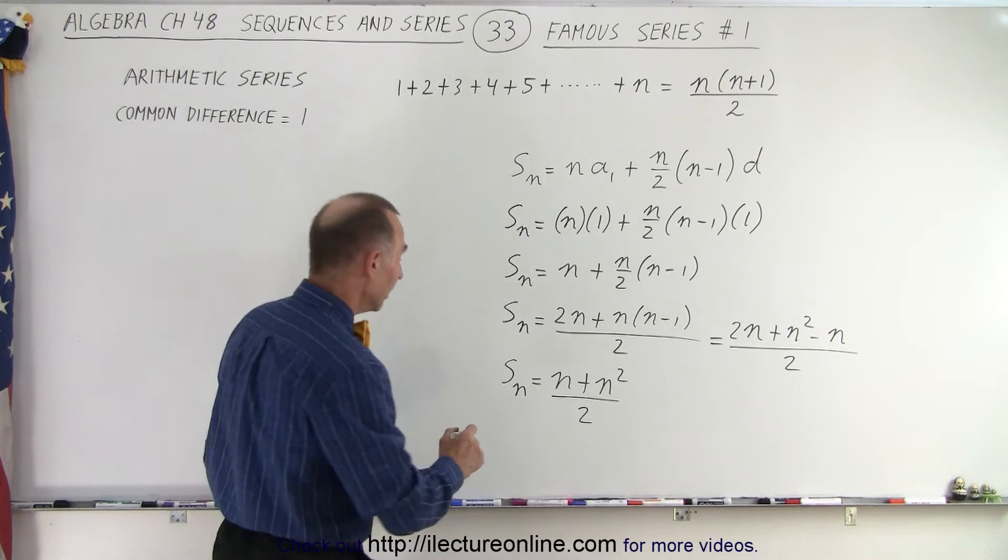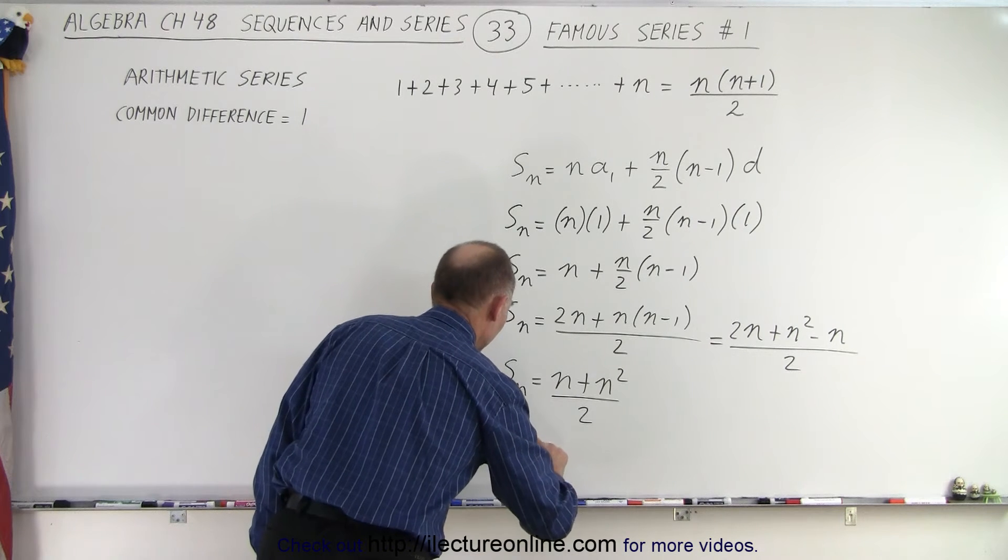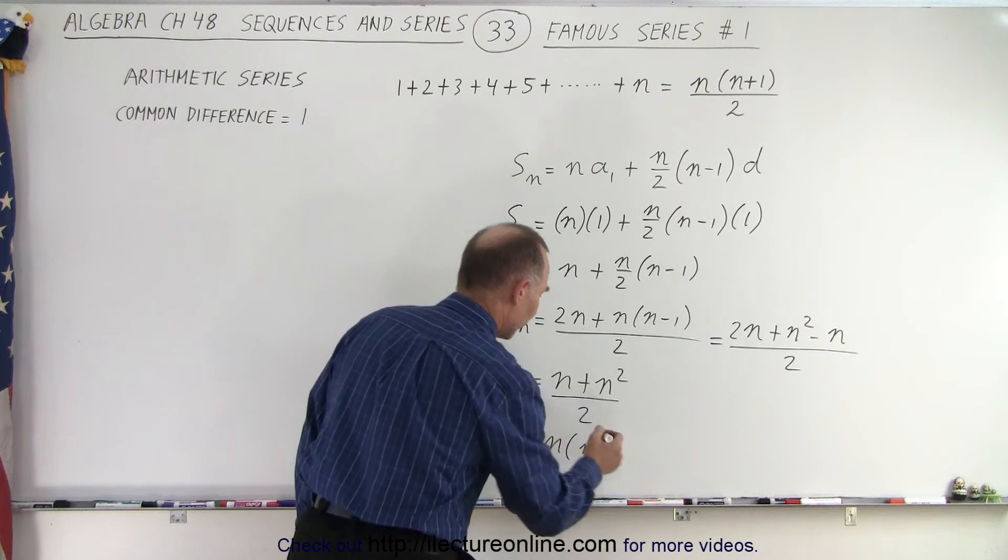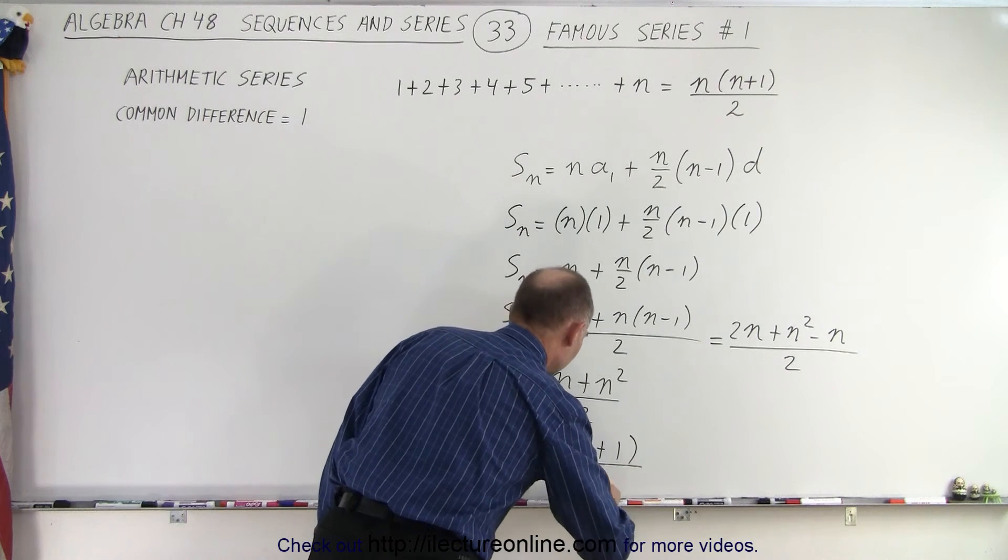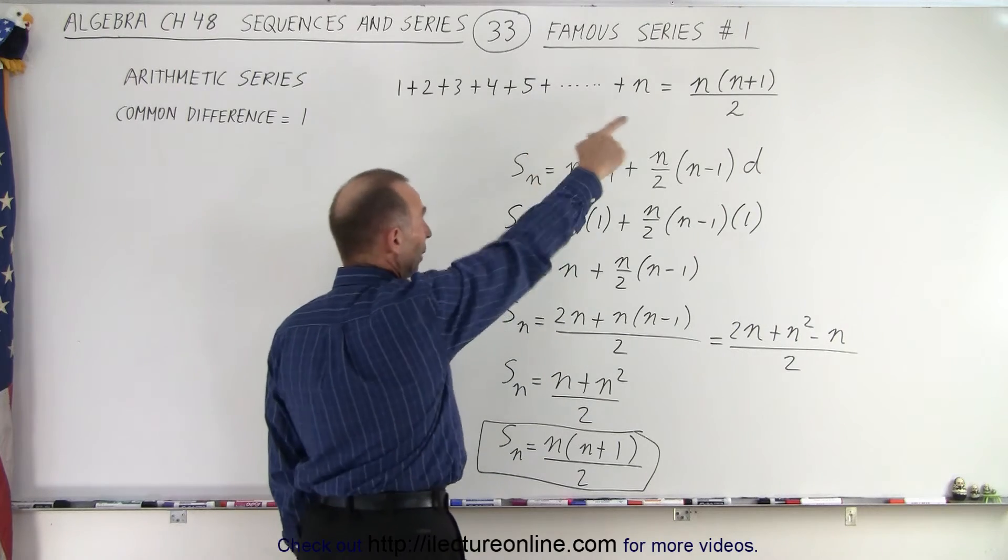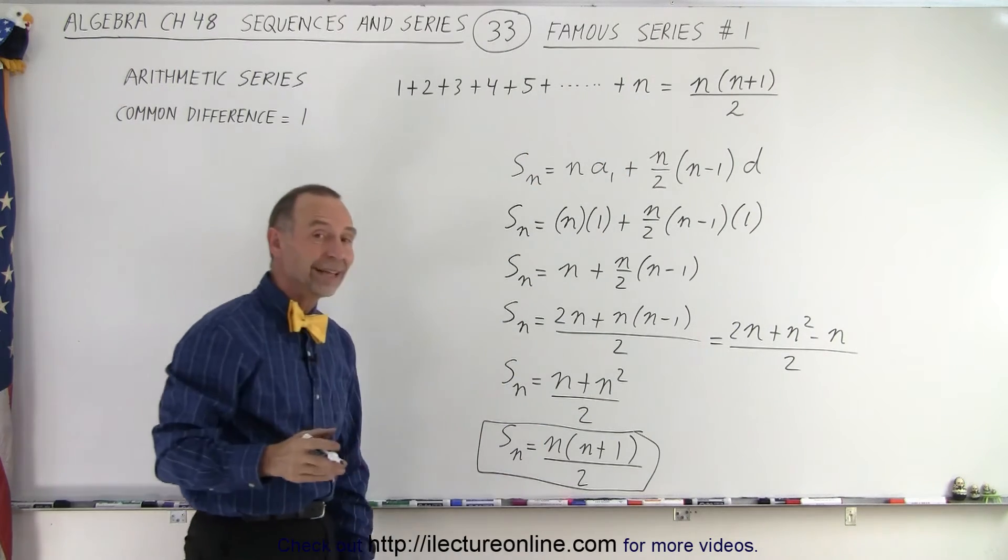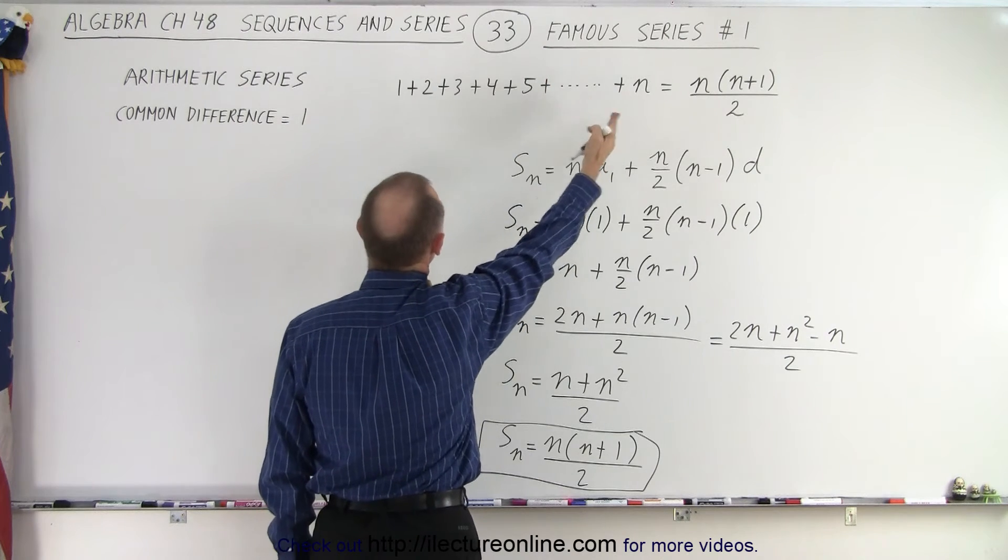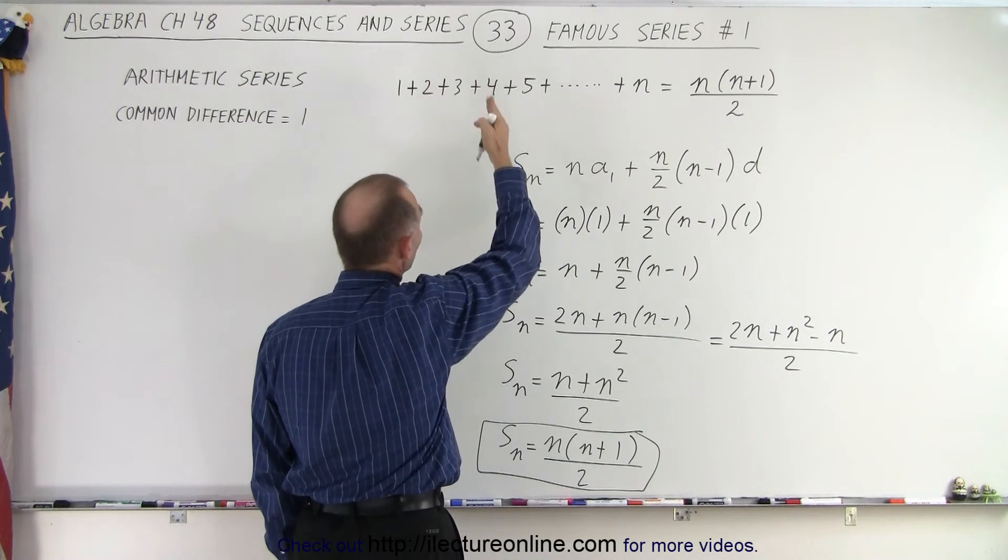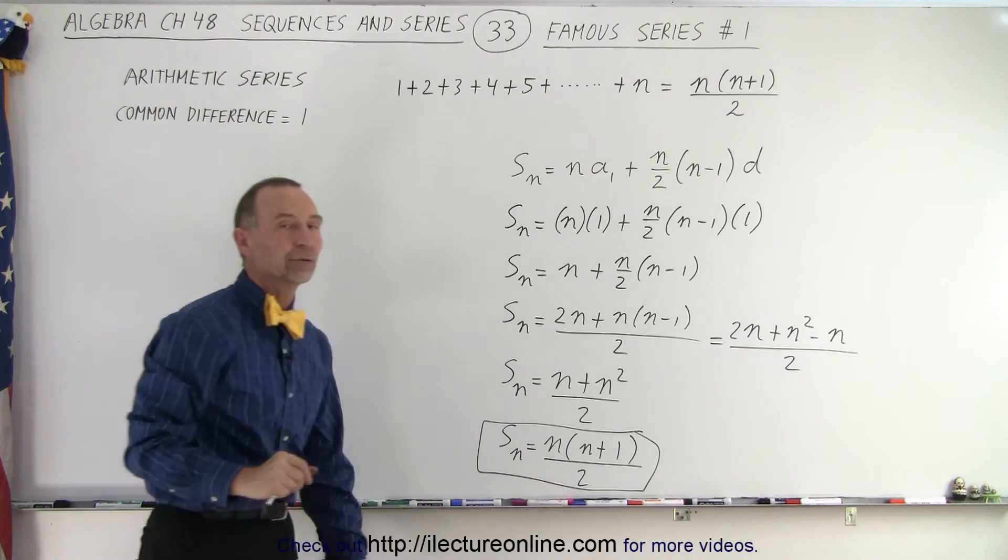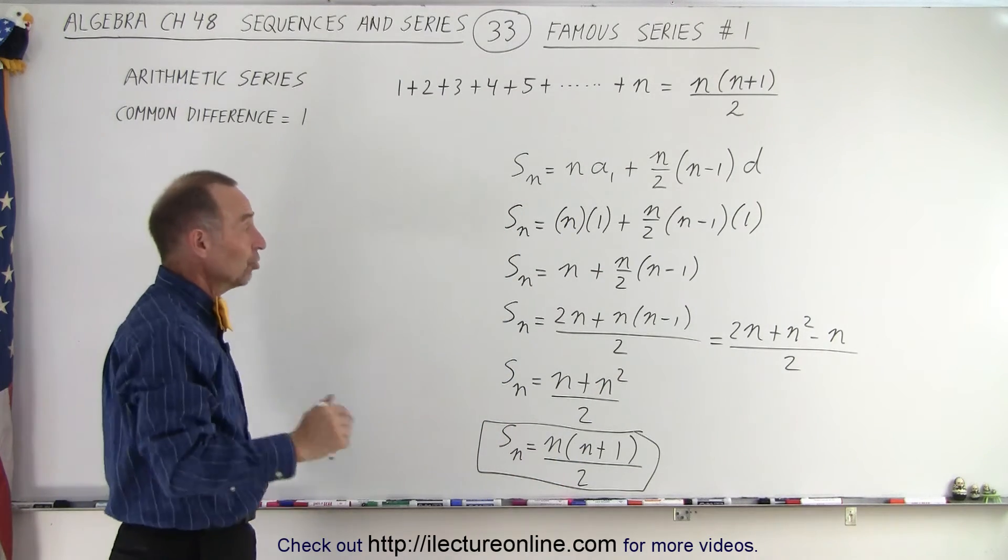And then if we factor out an n, we get sₙ = n(n+1)/2. And that is the general equation that we had over there, which means that the partial sum of the first n terms of this famous series 1 + 2 + 3 + 4 + 5 and so forth is going to equal n(n+1)/2. Now we can check that again.